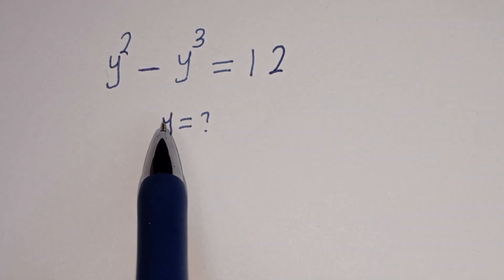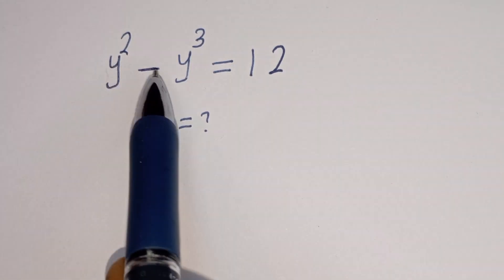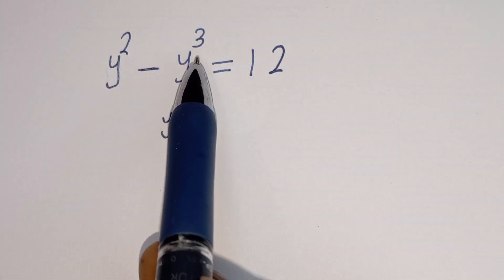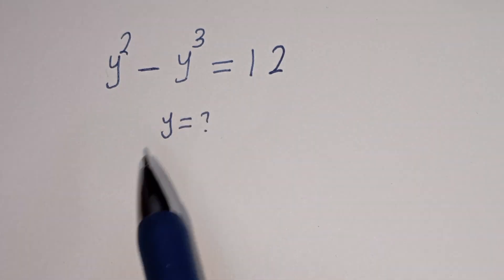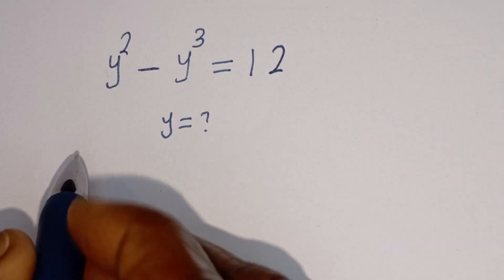Hello. How to solve for y in this equation: y squared minus y to the power of 3 is equal to 12.